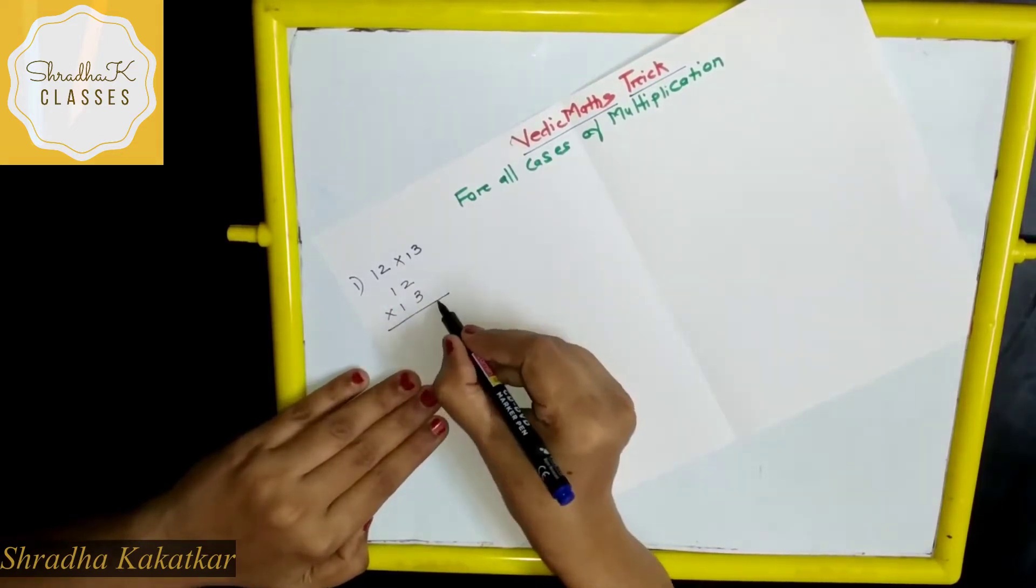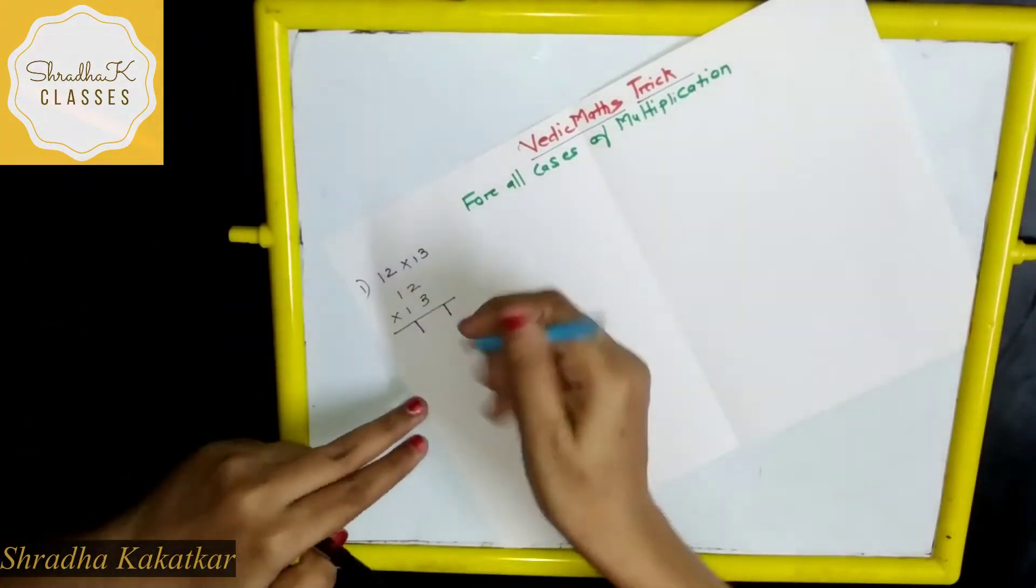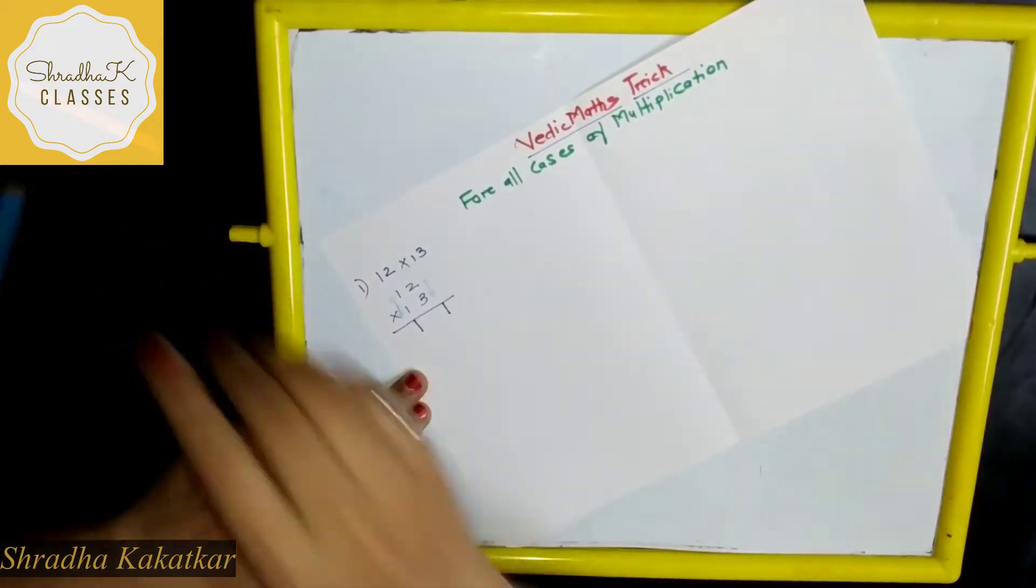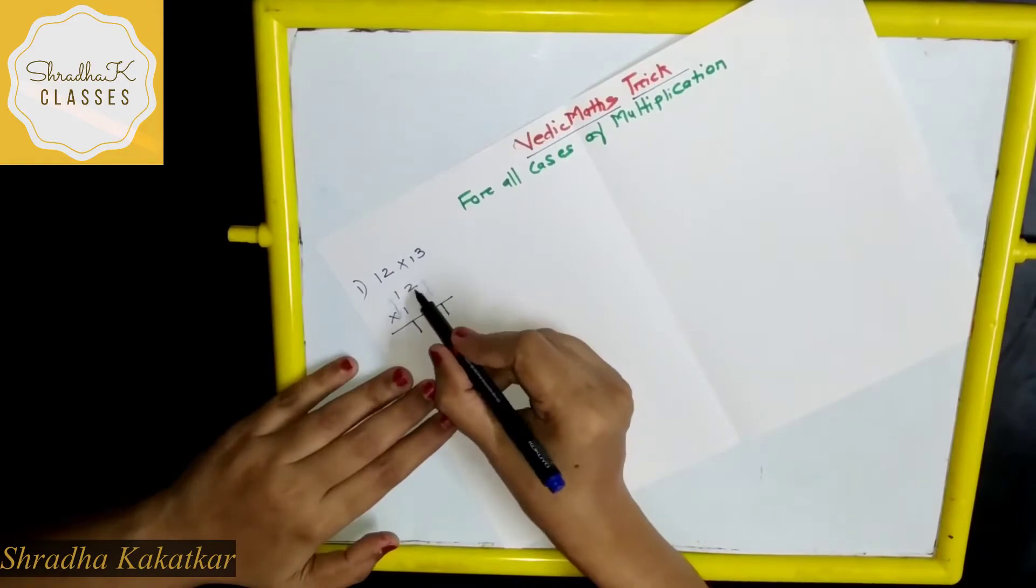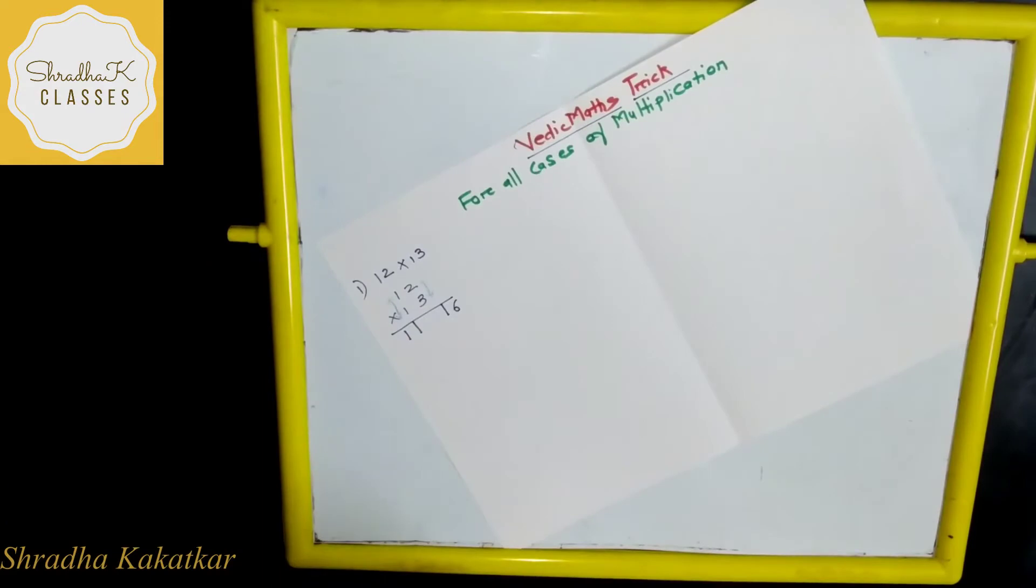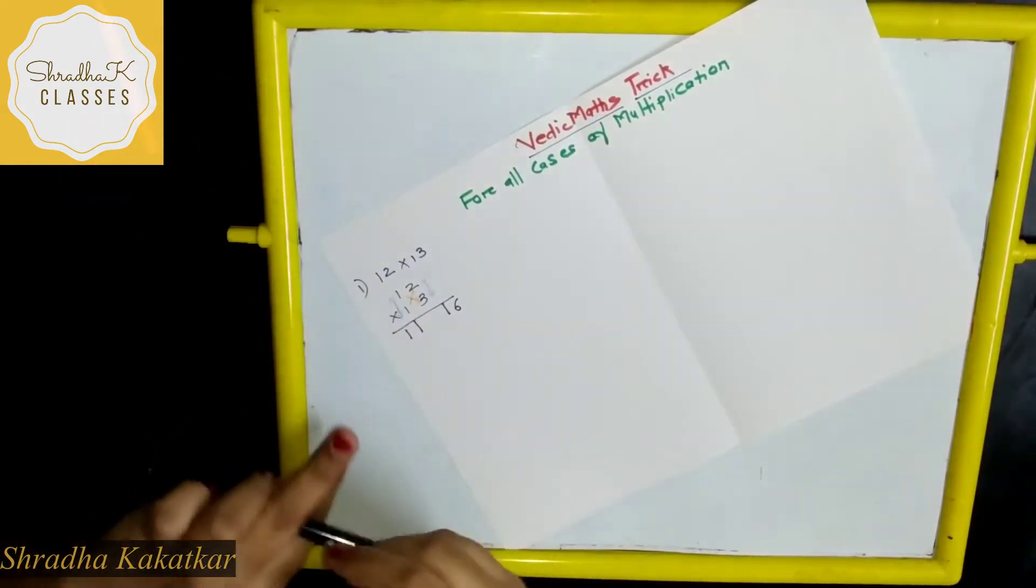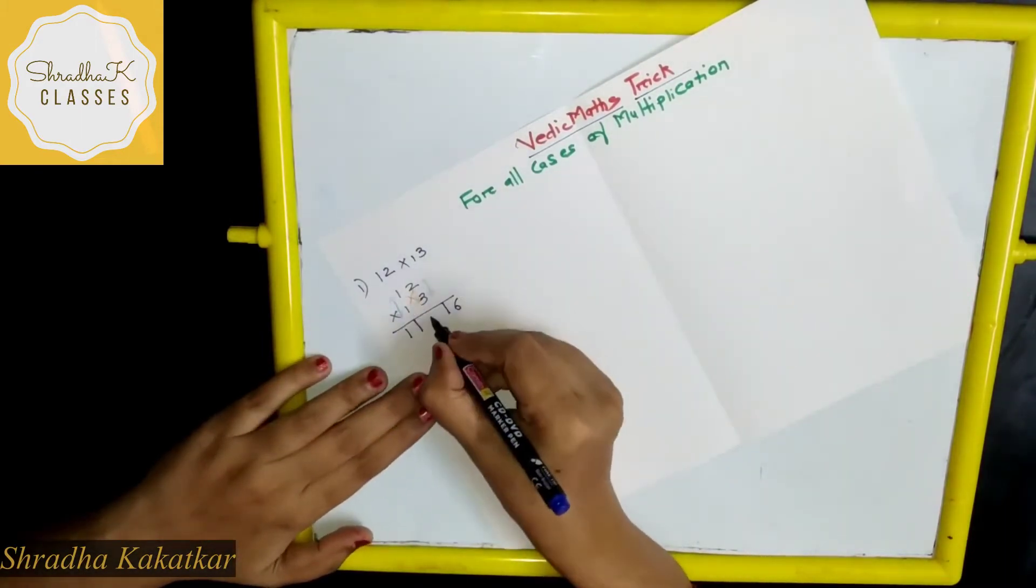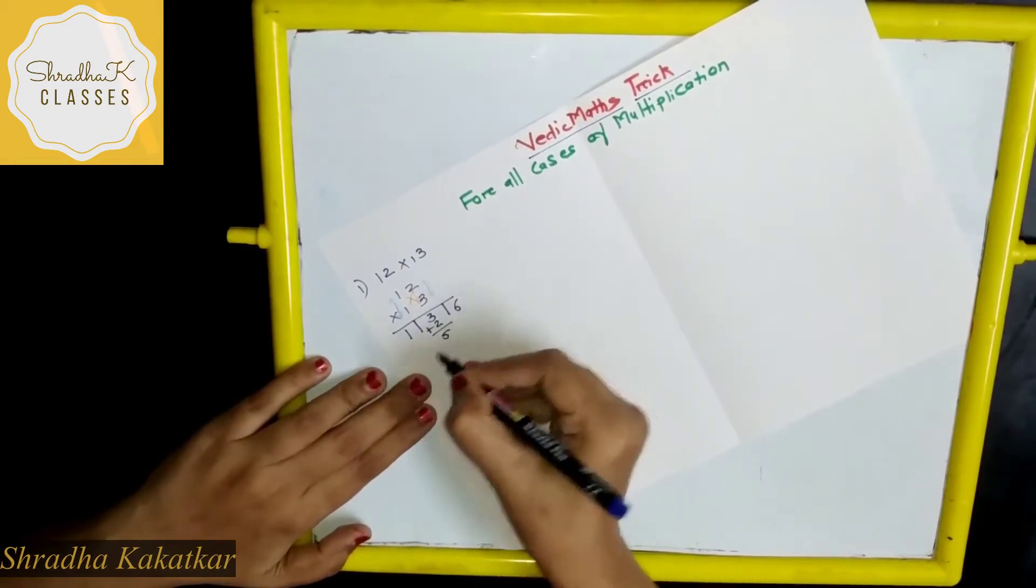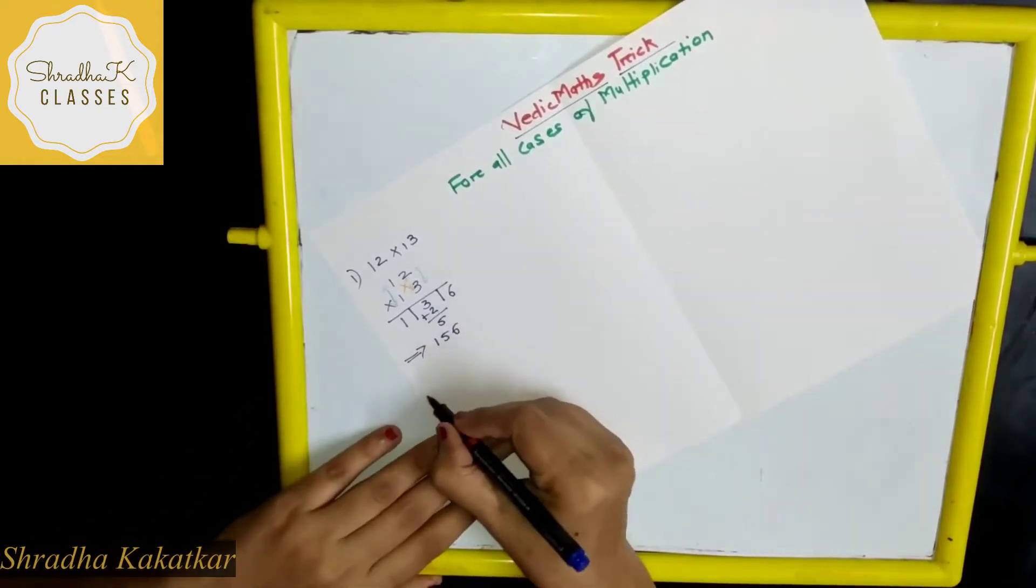Now divide this into 3 parts. Now what you have to do is first multiply these numbers vertically. So 2 into 3 is 6, 1 into 1 is 1. Now multiply them crosswise. So 3 into 1 is 3 and 2 into 1 is 2. So that is 5. So what is the answer? 156.